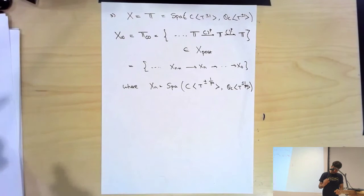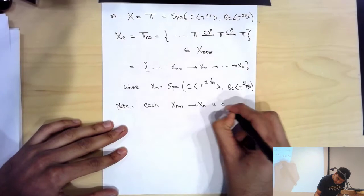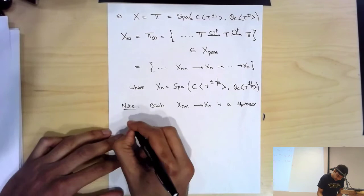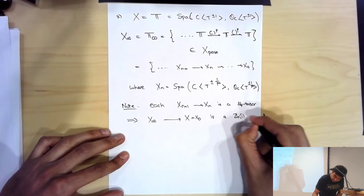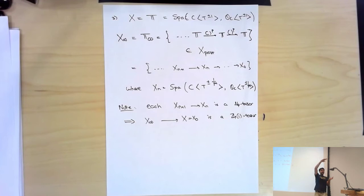I want to talk about torsors. Each map X_{n+1} → X_n is a μ_p-torsor, because you're extracting a p-th root of an invertible function — that's a finite étale cover whose Galois group is the p-th roots of unity acting in the obvious way. Therefore, thinking of X_∞ as a cover of X = X_0, this is actually a Z_p(1)-torsor. Now, you're not allowed to do this in algebraic geometry in the usual setting, because the inverse limit doesn't live in the world of finite-type objects. But the pro-étale topology actually allows you to make sense of this.